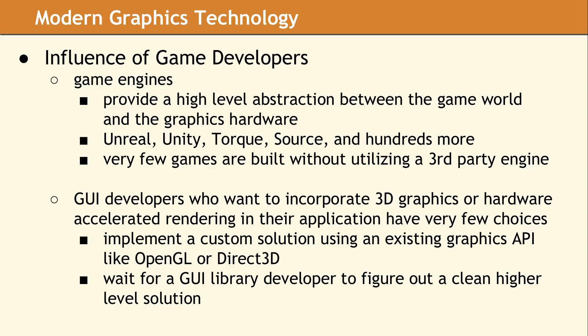One of our CopperSpice libraries can be used to access the OpenGL API from your GUI application. You can designate a drawing area where your graphics are rendered. The problem is that existing widgets like a QPushButton or a QComboBox are not drawn using OpenGL. We are in the development cycle on a new rendering library, which CopperSpice will use to paint the existing widgets using a modern graphics API like Vulkan or OpenGL.